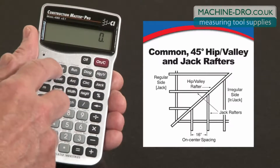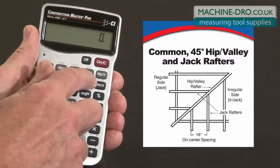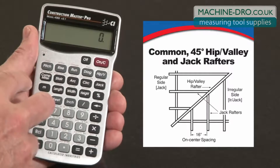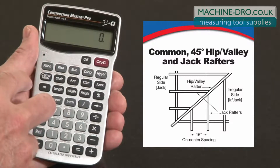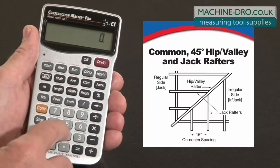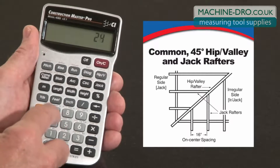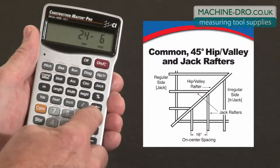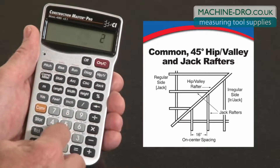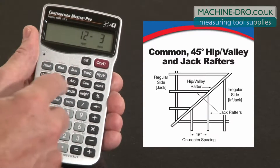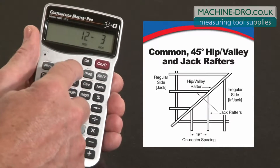We'll be using the pitch, rise, run, and diagonal keys. As long as you have any two of these values, you can solve for the rest. In this case, let's say our building has a twenty-four foot, six inch span. So we'll enter that — twenty-four feet, six inches — and divide that by two. That gives us our run: twelve foot, three inches. I'll enter that as run.